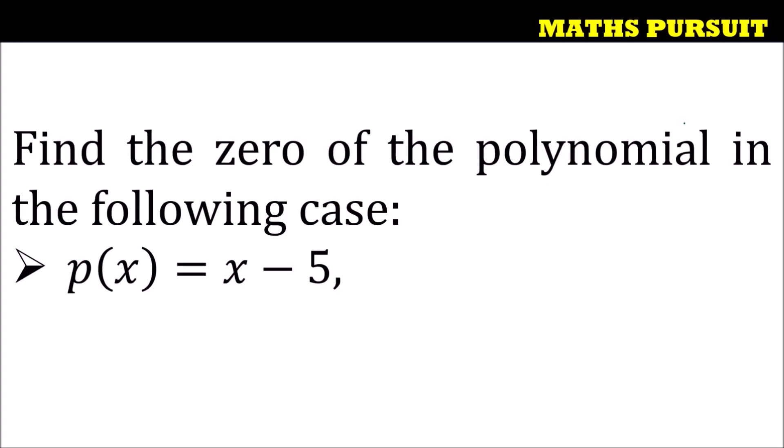The given question is find the zero of the polynomial in the following case, and the given polynomial is p(x) = x - 5.